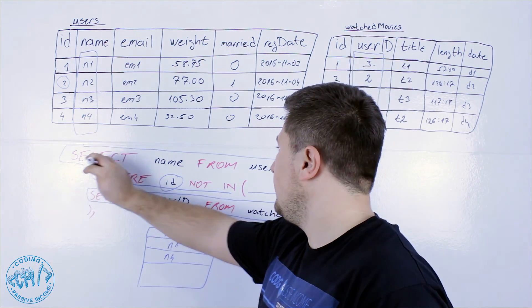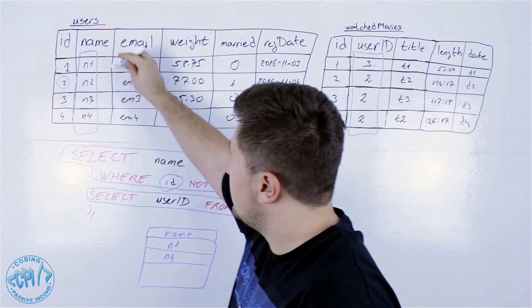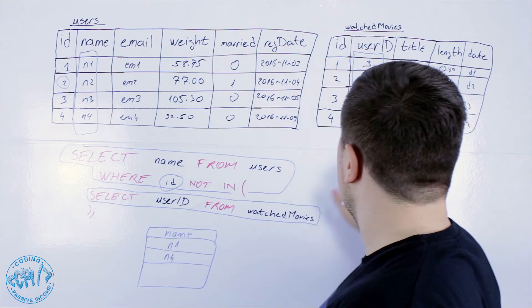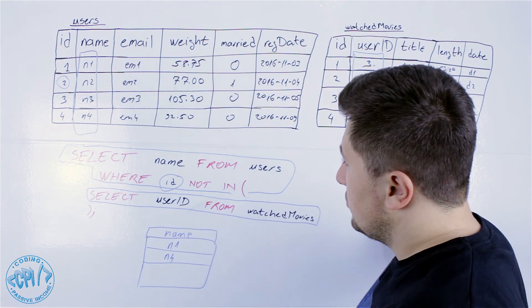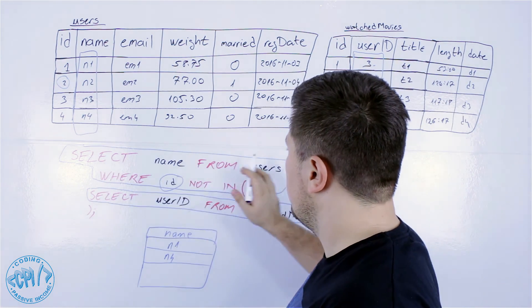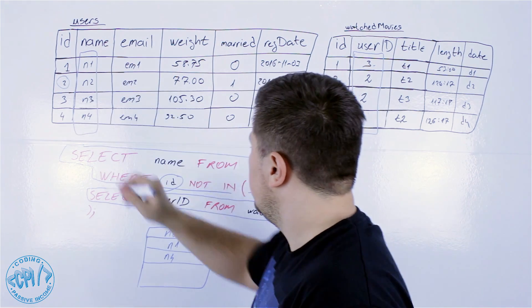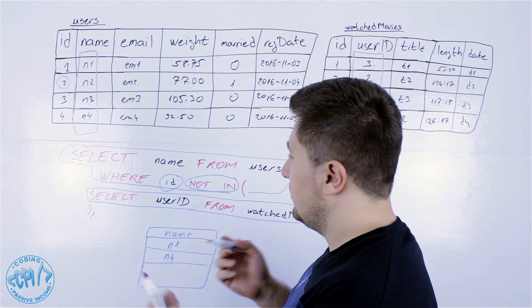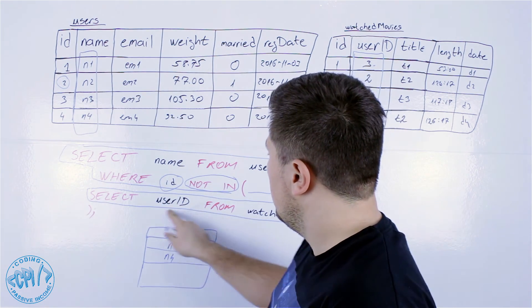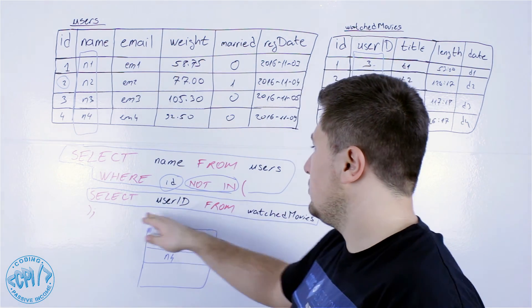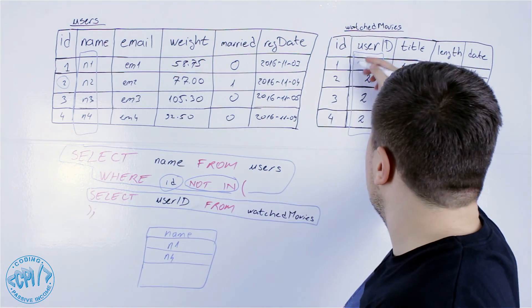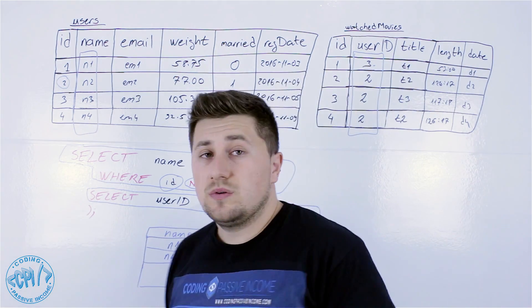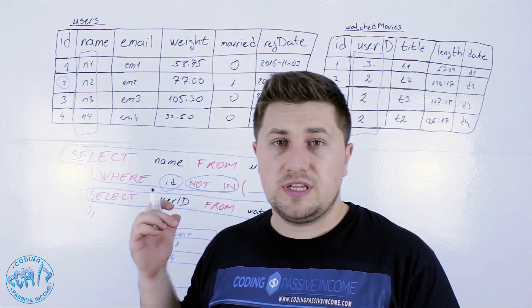So once again, we have the main query which will just get the names, and now we need some subquery that will get the data from another table. So now if we execute SELECT name FROM users WHERE ID, and this here you just analyze and compare this ID with the result of this subquery, and this subquery will just select all user IDs from the watched movies table. So that is just one example and I hope you understand this.